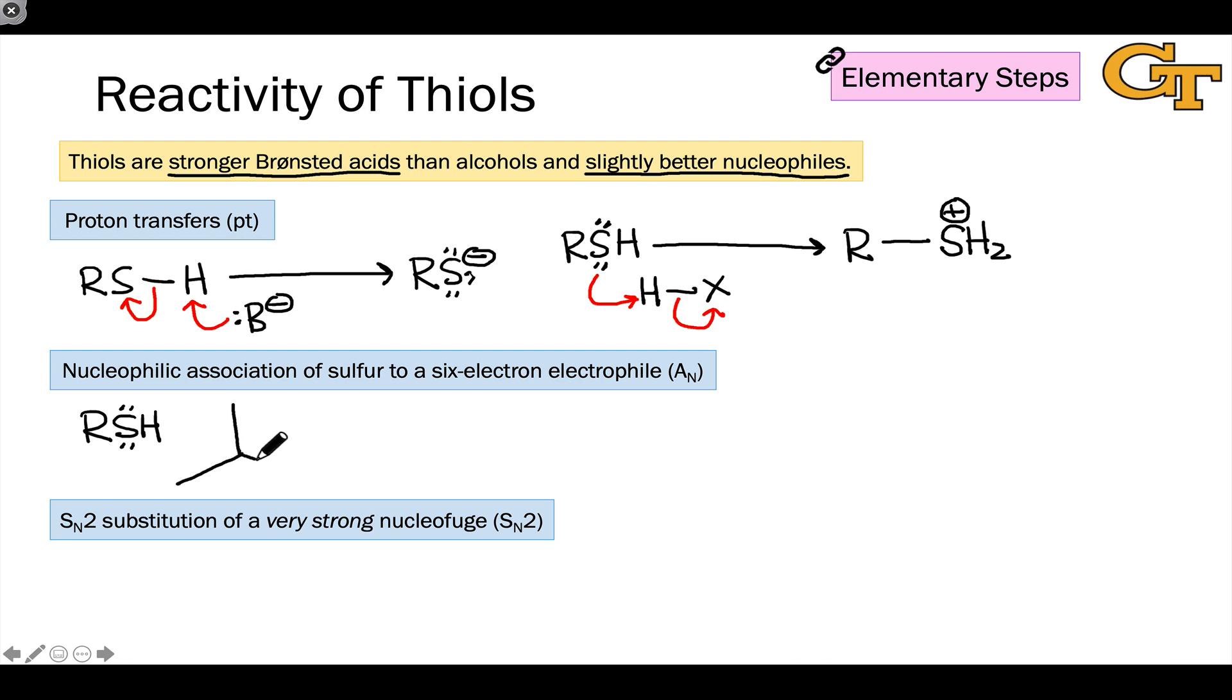So for example, if we can generate a carbocation like this in the midst of something like an SN1 reaction, the thiolsulfur will readily coordinate to it in an A sub N or association of a nucleophile elementary step. In the resulting product, the thiolsulfur is now positively charged, and we've formed a new bond between carbon and sulfur.